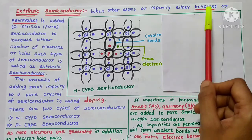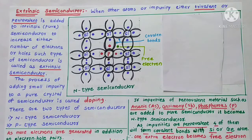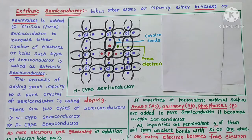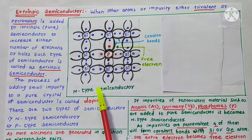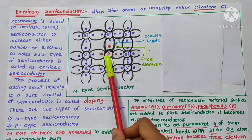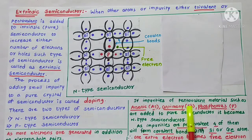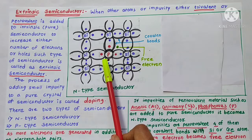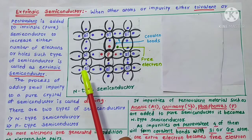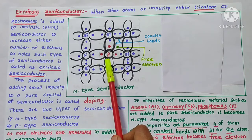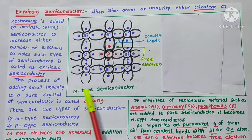By adding such impurity to a pure semiconductor, there are basically two types: N-type semiconductor and P-type semiconductor. In N-type semiconductor, when the pentavalent impurity — for example, arsenic, antimony, phosphorus — is added to a pure semiconductor, either silicon or germanium, the newly formed extrinsic semiconductor is called N-type semiconductor.